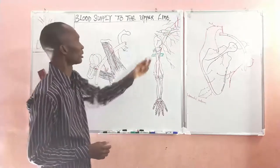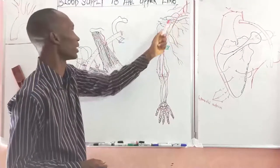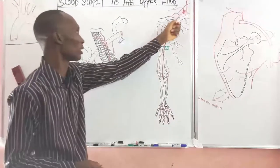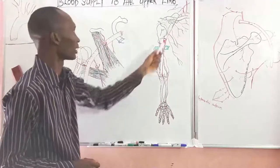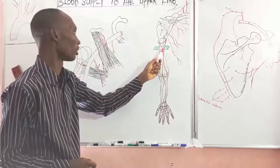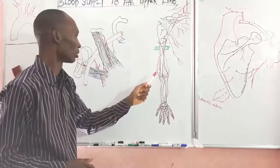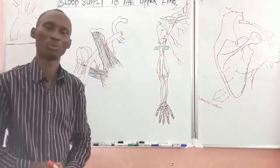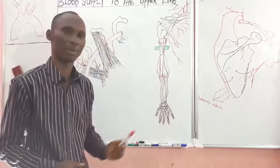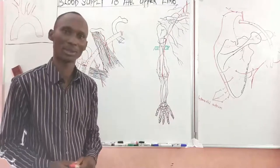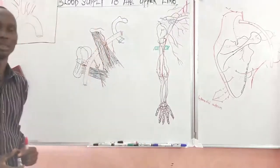The diagram here shows a summary of the entire blood supply to the upper limb. It actually starts from the arch of aorta, which gives off the subclavian artery. That gets to the upper part of the first rib, where the name changes to the axillary artery. The axillary artery moves down to the lower part of teres major, where the name changes to the brachial artery. The brachial artery moves to the level of the neck of radius, where it divides into its two terminal branches: the radial artery on the lateral side and the ulnar artery on the medial side.